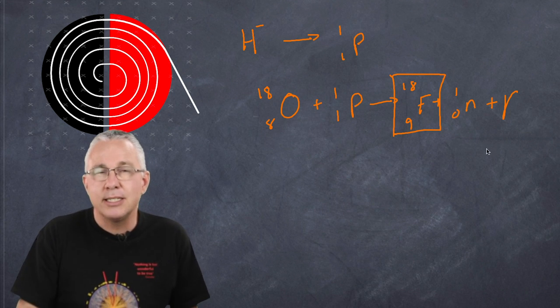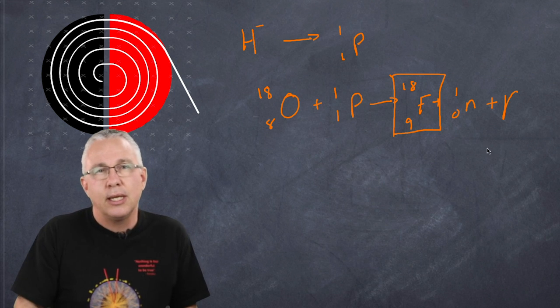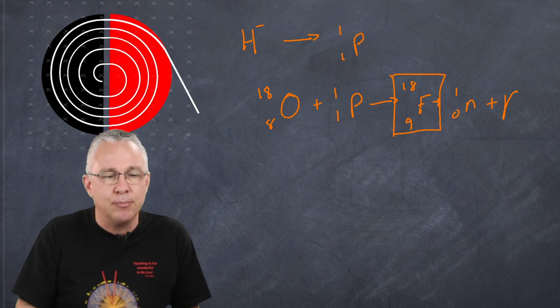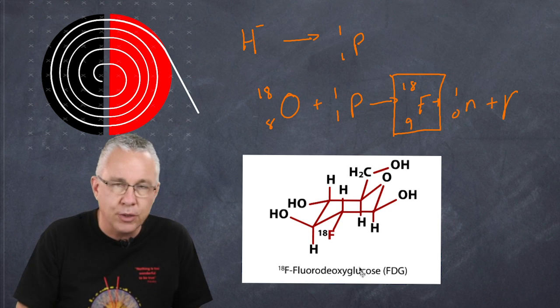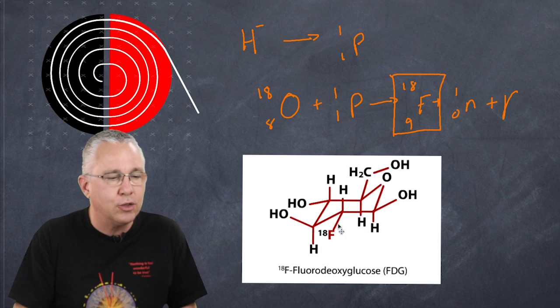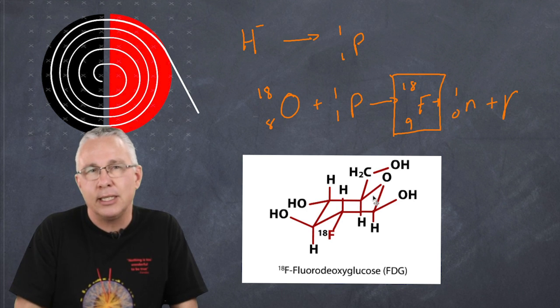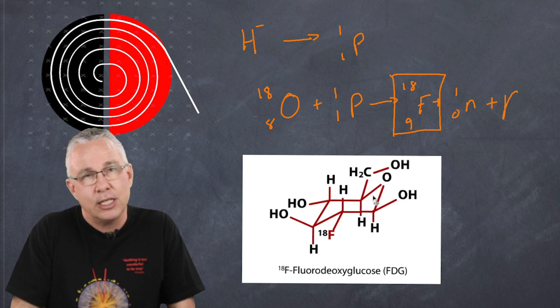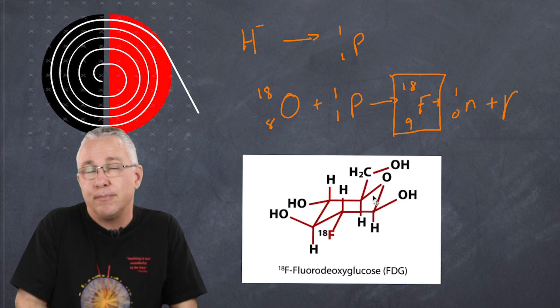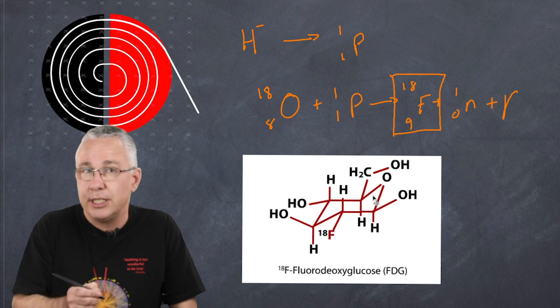It's this fluorine that is then attached to a form of glucose called 2-deoxyglucose. I'm not going to go through the process of how they do that, but the end product is the substance we're after. In this case it's called fluorodeoxyglucose. It looks like a glucose molecule except where there's an oxygen we have a fluorine. As I mentioned to you before, it's that fluorine that decays into oxygen with the release of a positron, which then annihilates with a local electron to produce a gamma radiation burst, which is then picked up by the gamma camera. So that's how FDG is produced.